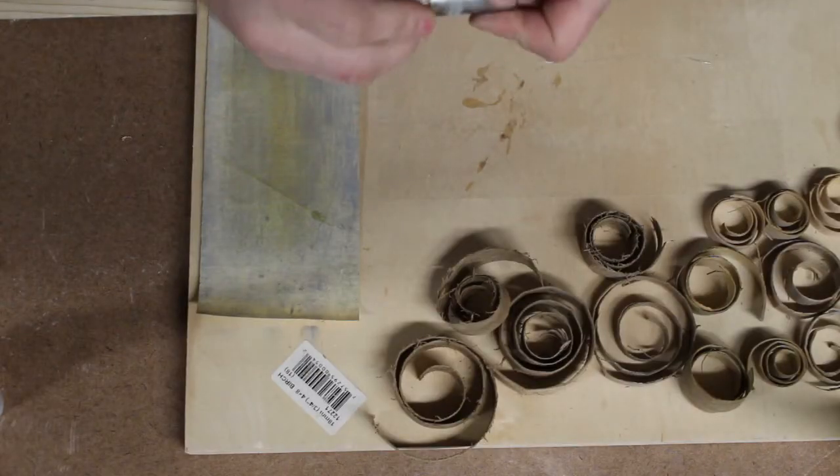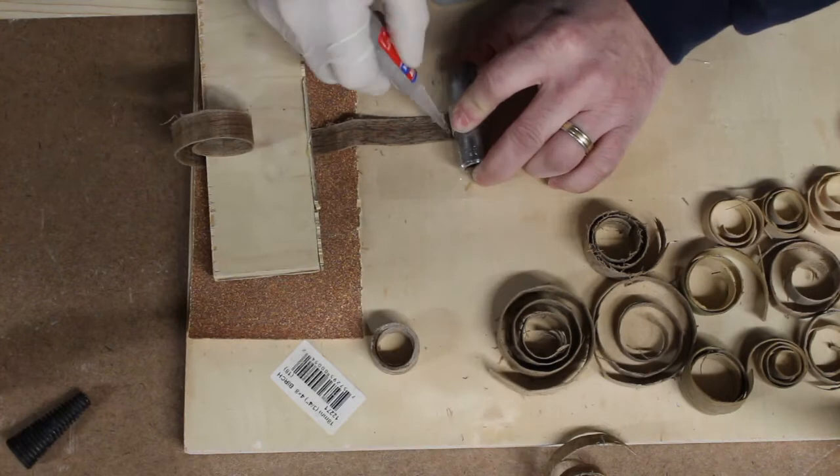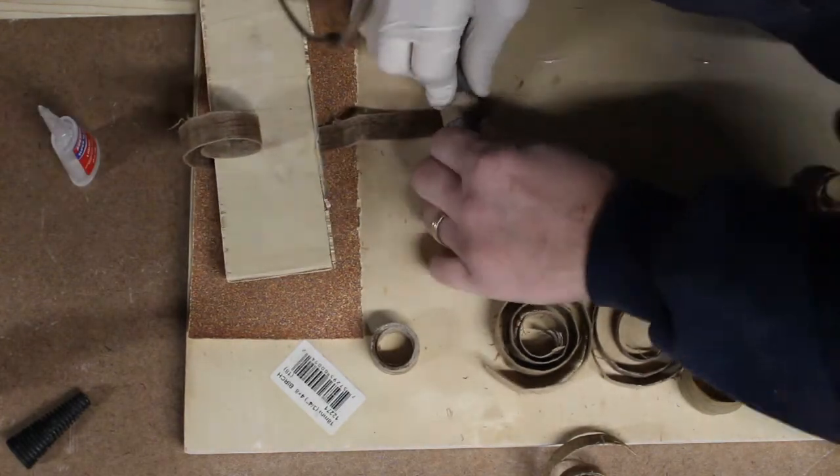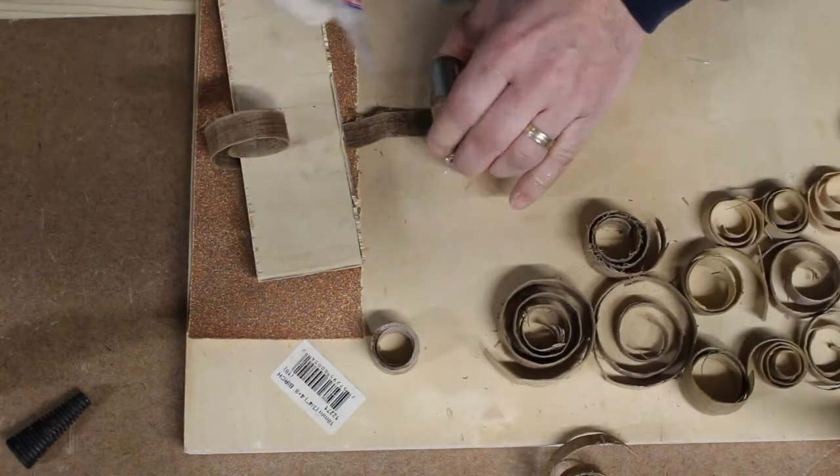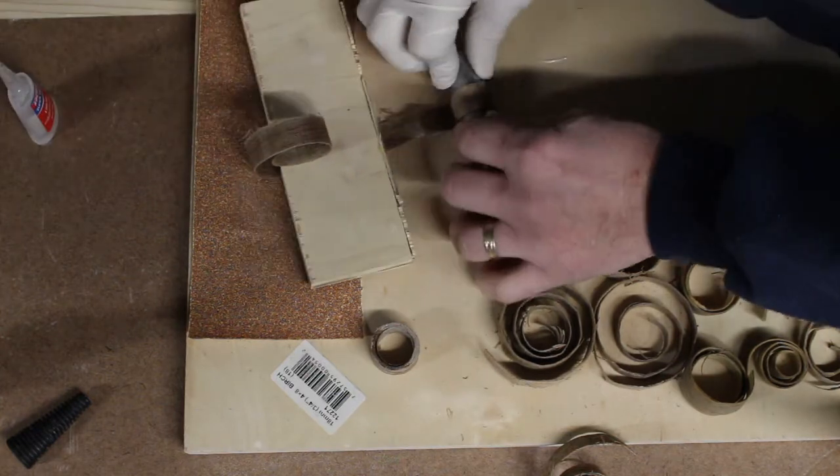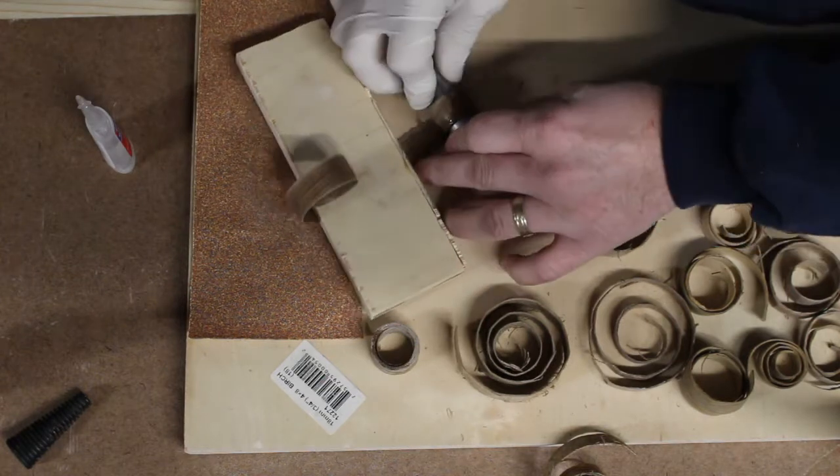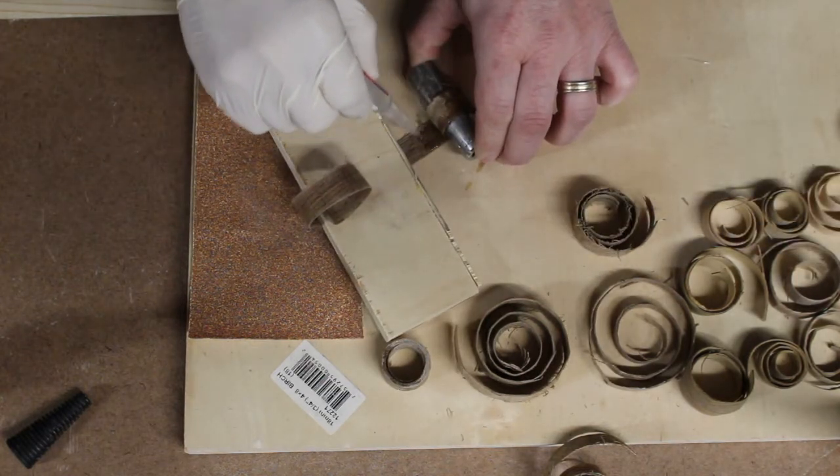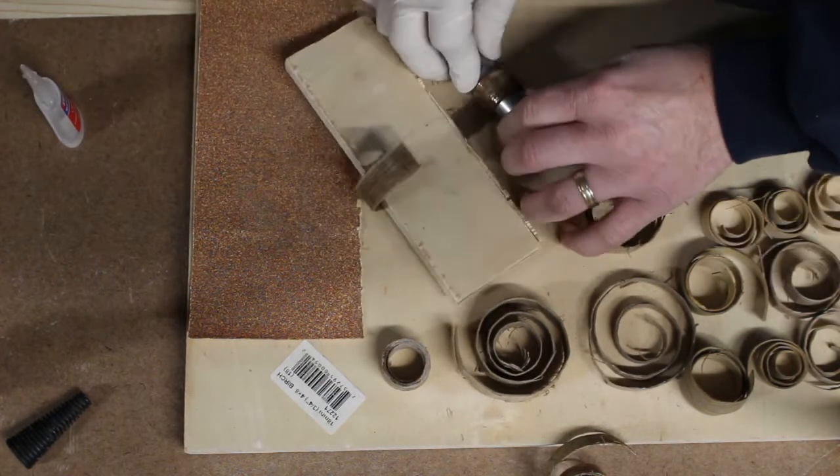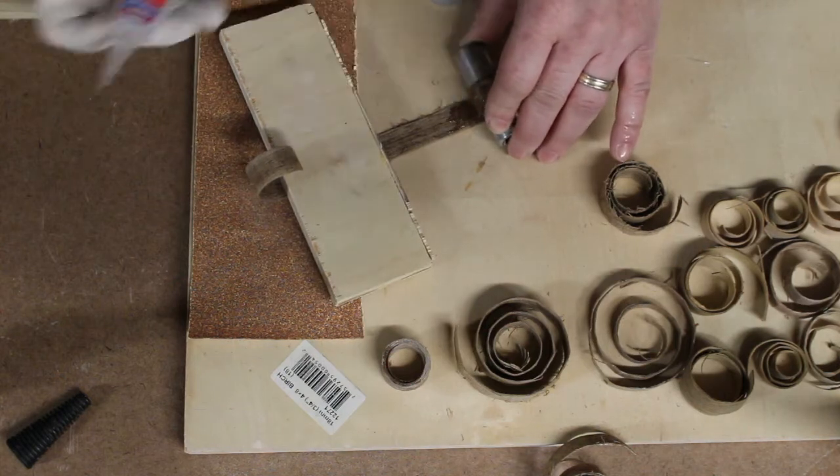Once the glue is set, you can remove it from the socket, and then I repeated the same process for all of the strips of veneer to make them into the rings. You can also use a piece of cut-off wood—I used a piece of plywood here—just to hold back the roll of veneer as you glue it up. This makes it a little bit easier to see where you're gluing and able to manipulate the veneer a little bit better.